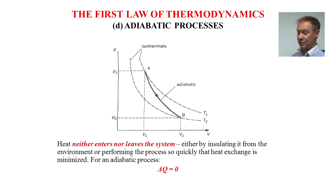Next is adiabatic process, in which heat neither enters nor leaves the system, either by insulating it from environment or performing process so quickly that heat exchange is minimized. In this case, delta Q is zero. Notice the change in slope between isothermal and adiabatic. In isothermal processes, PV is constant, and in adiabatic processes, PV to the gamma is constant, where gamma is characteristic of the gas.